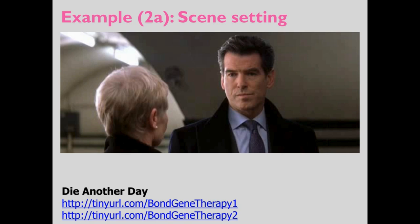As a scene-setter: two clips from the film Die Another Day, where Bond explains that gene therapy is being used to change people's identity — turning a Korean army officer into a British aristocrat. This is absolute nonsense, and you can reinforce that by showing the second clip where the scientist explains the technique to Halle Berry. It's utter nonsense, but it helps to say: that's not what gene therapy is — so what is gene therapy?